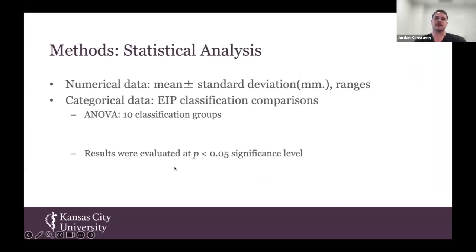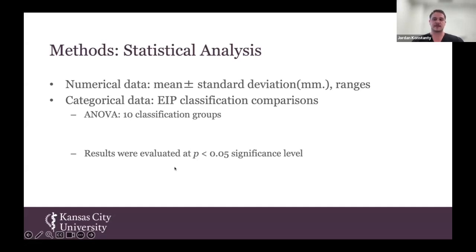For our statistical analysis, descriptive statistics were conducted on all numerical data to help determine our means, ranges, and standard deviations. We used ANOVAs to help determine the differences between our morphometric measurements and the classification types. Some groups were combined based on anatomic similarities to ensure that sample sizes would be large enough to satisfy the requirements of post hoc testing, resulting in 10 classification groups for our ANOVAs.